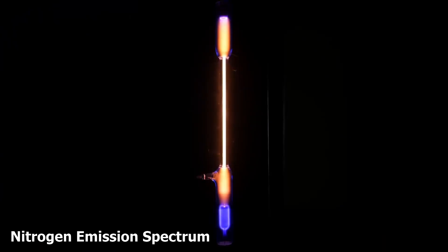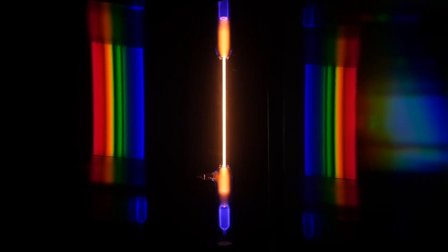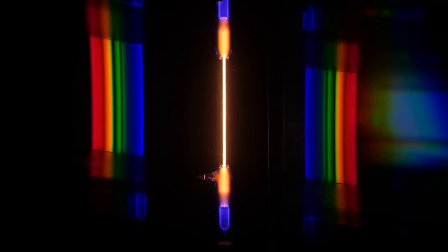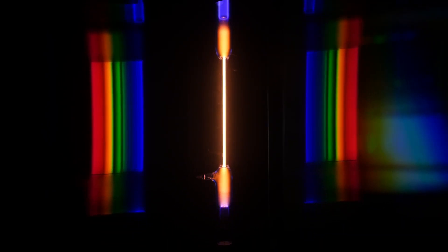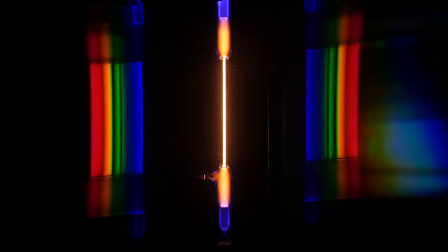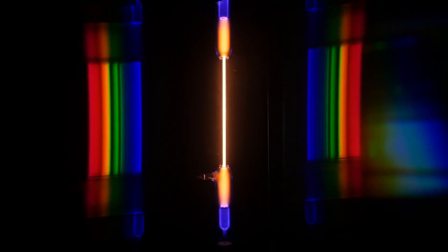So this is nitrogen spectrum. And with the diffraction grating in place, we see a number of lines present. Some red, orange, yellow, green, and a violet turquoise-ish colored line. That's nitrogen.